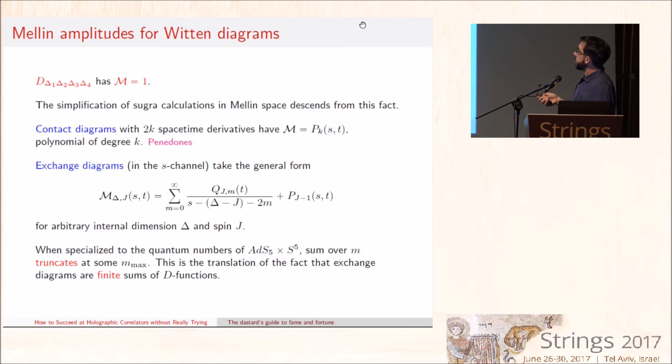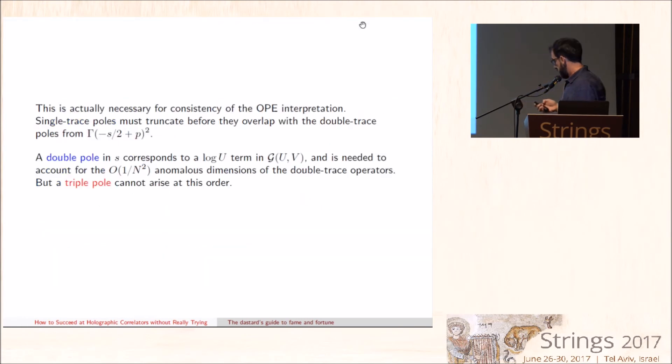And this is translating to the fact that Witten diagrams are extraordinarily simple. This basic contact diagram has Mellin amplitude equal to one, and exchange diagrams are simple meromorphic functions with computable residues. It turns out that for the case of interest which is AdS5×S5, the sum over poles are truncated to some Nₘₐₓ, and so exchange diagrams are rational functions. In Mellin space, the amplitudes in AdS5×S5 are some appropriate rational functions, and the truncation has a natural CFT interpretation which I don't have too much time to explain now, but it's really forced upon us by consistency of the operator product expansion.